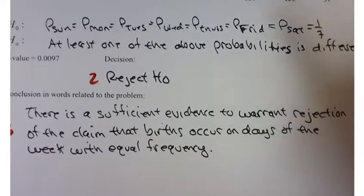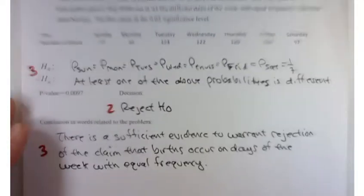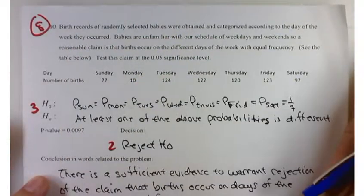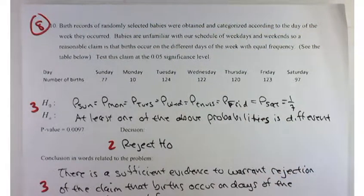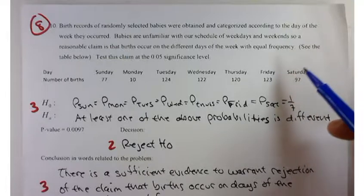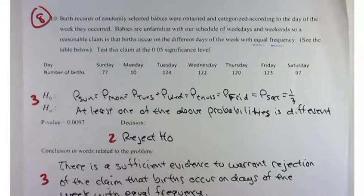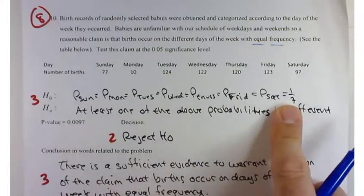Birth control records of babies were obtained and categorized according to the day of the week they occurred. A reasonable claim is that births occur on different days of the week with equal frequency. There's a couple ways you could state this one, but if we're looking at equal frequency across many different days, then that means each day has the same probability of success, which would be 1/7.